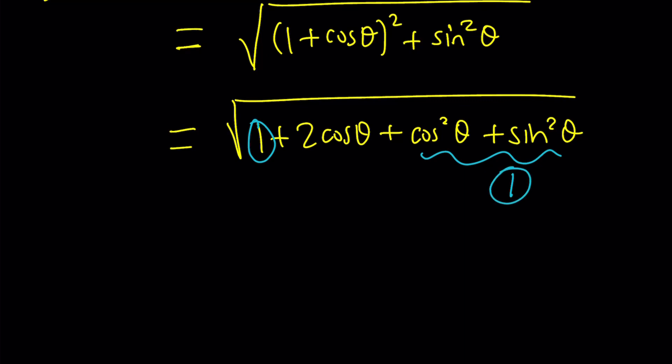That gives us a really cool identity. One plus one. That's going to become a two. So we'll get two plus two cosine theta and the square root of that, of course. So that's the answer. But guess what? We can simplify it using what? Double angle formulas. Or should I say half angle? Let's see.